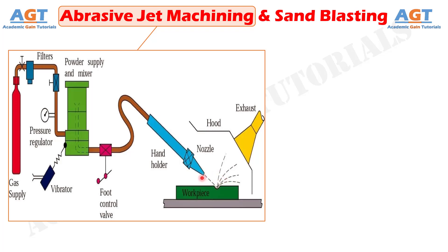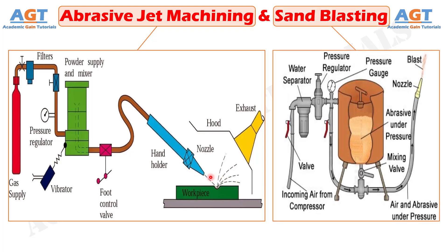Abrasive jet machining is commonly used for surface cleaning, such as removing oxide layers, smears, coating, or color present on a solid surface. Another similar age-old technique is sandblasting, where fine sand particles are propelled to the work surface by pressurized air at a very high velocity to remove material. The mechanism of material removal through impact erosion is the same for both abrasive jet machining and sandblasting processes.